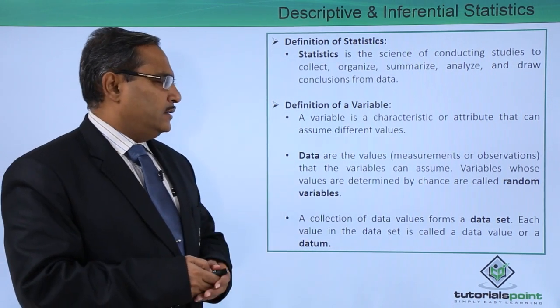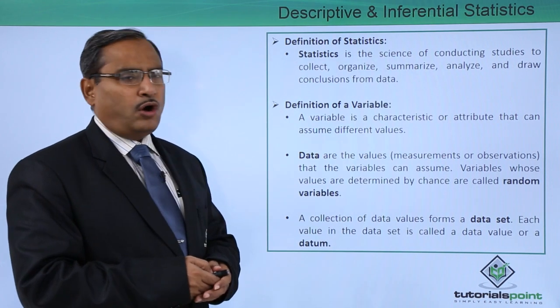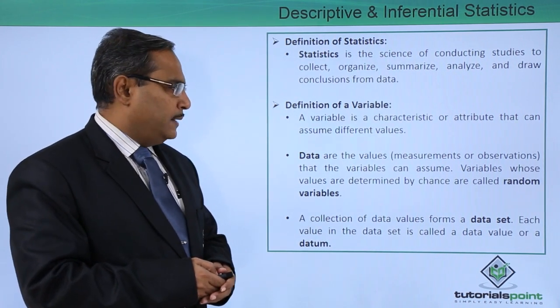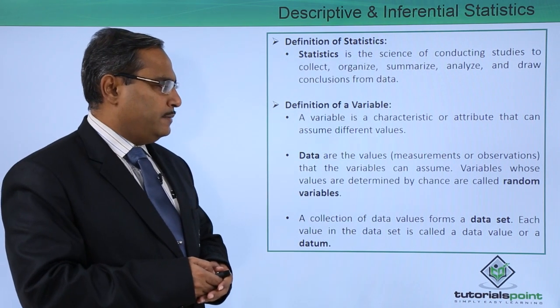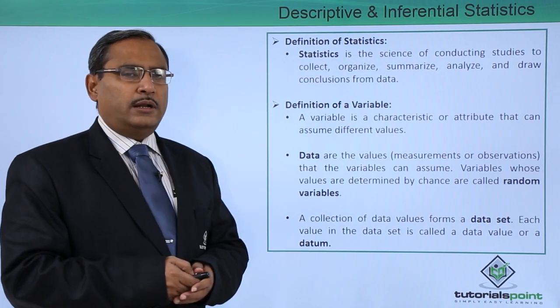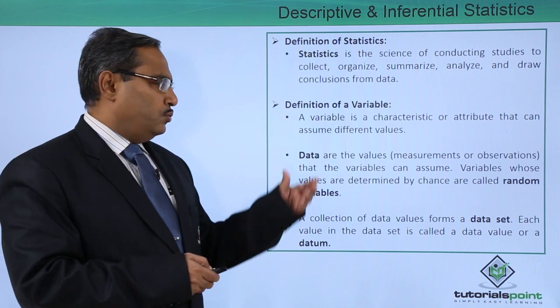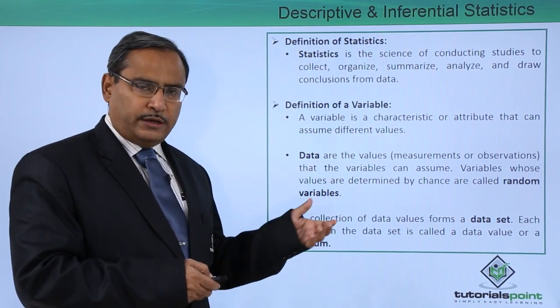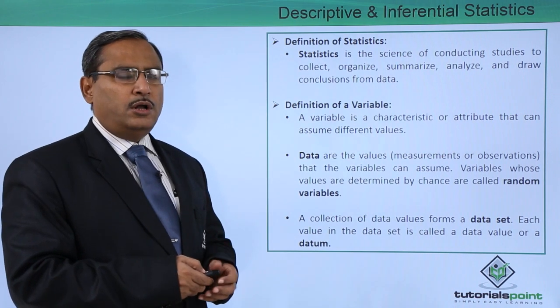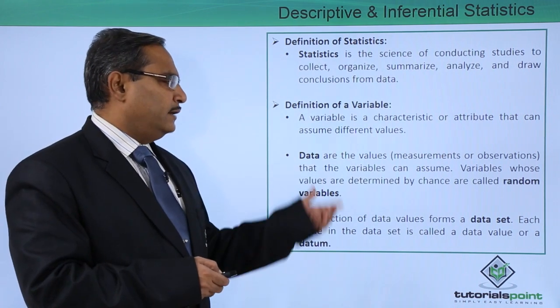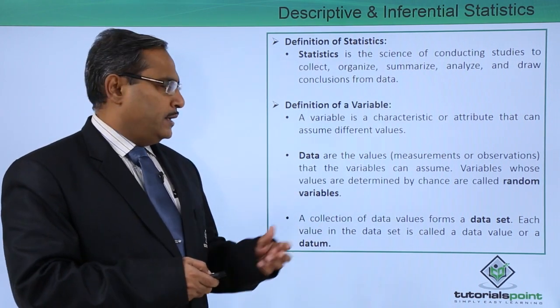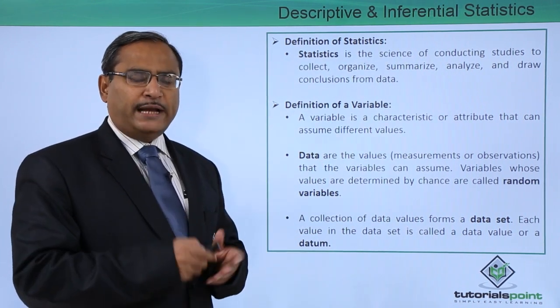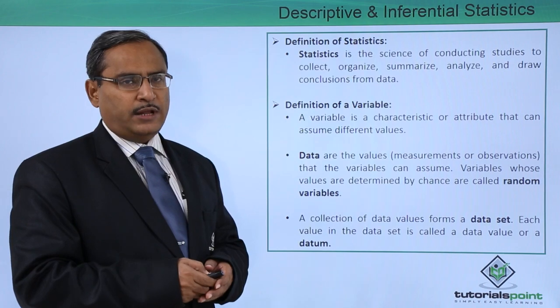Data are the values, measurements, or observations that variables can assume. Variables whose values are determined by chance are called random variables.